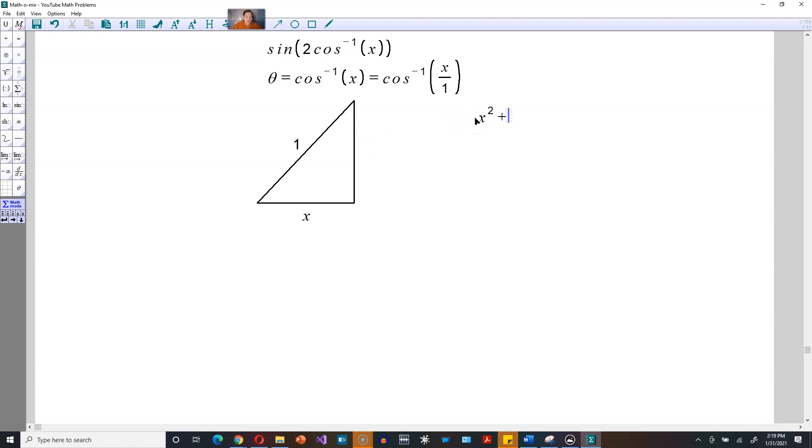This side can be found using the Pythagorean theorem. You can say x squared plus y squared here is equal to 1 squared as the first step. From there you would say that x squared plus y squared is equal to 1, and then you solve this for y.